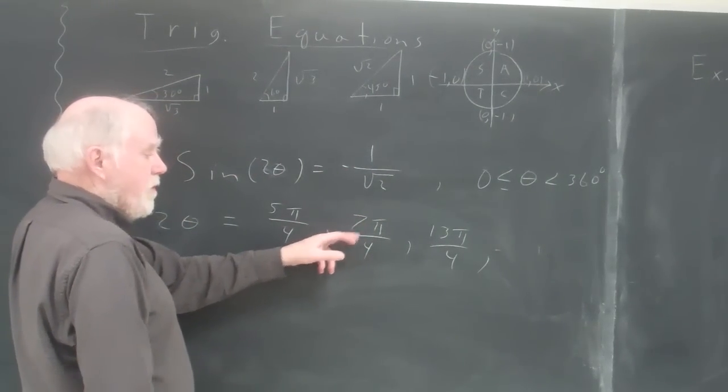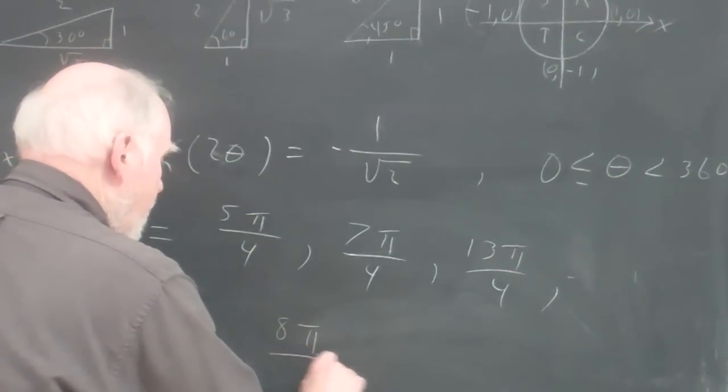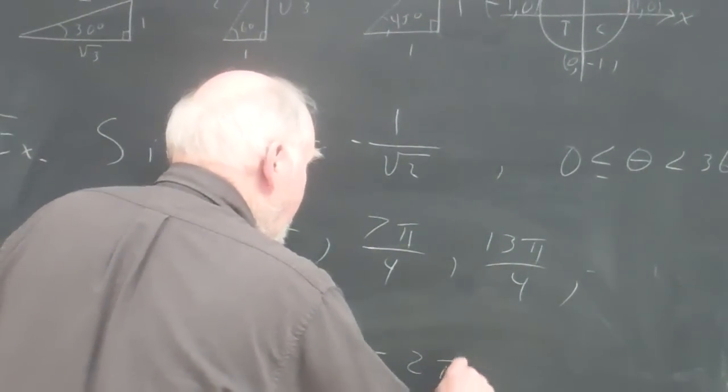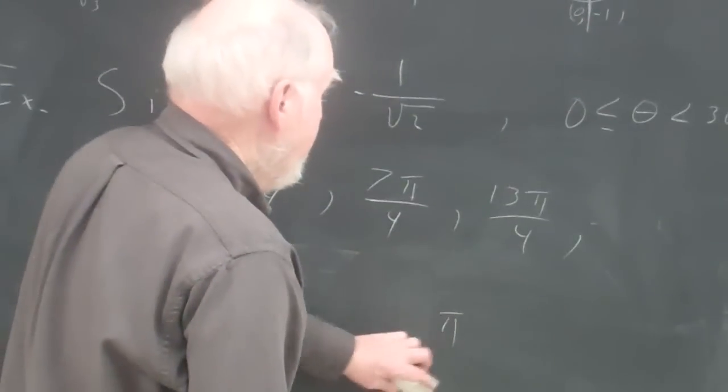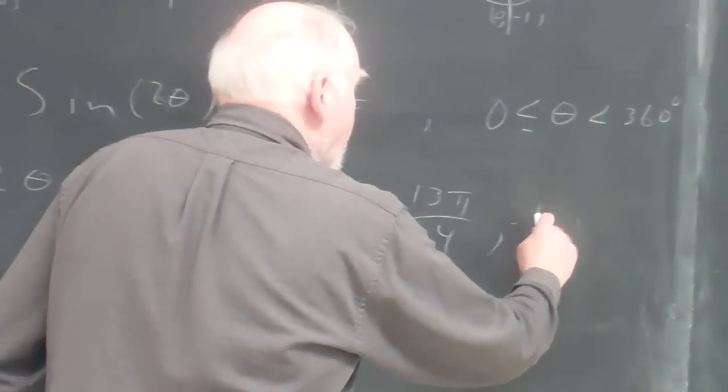But I'm going to add 8 pi over 4 to this and get 13 pi over 4. And I'm going to add 8 pi over 4, which, of course, 8 pi over 4 equals 2 pi, so I'm adding 2 pi or 360 degrees to each one of these. And I will get 15 pi over 4.